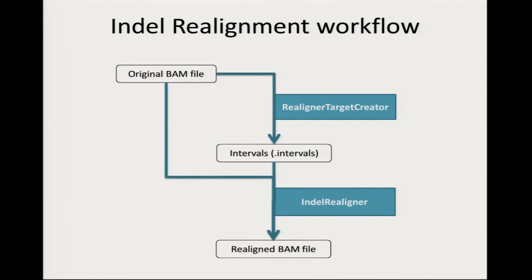The workflow is very simple — two steps: the Realign Target Creator and then the IndelRealigner. The input is the original data and optionally known indel information. The first step takes the original data and known indel positions from other sources, and creates an interval file containing the different targets to consider for realignment. The command is a typical GATK command with options for the reference, the original data, known indels in VCF format, and the output location.